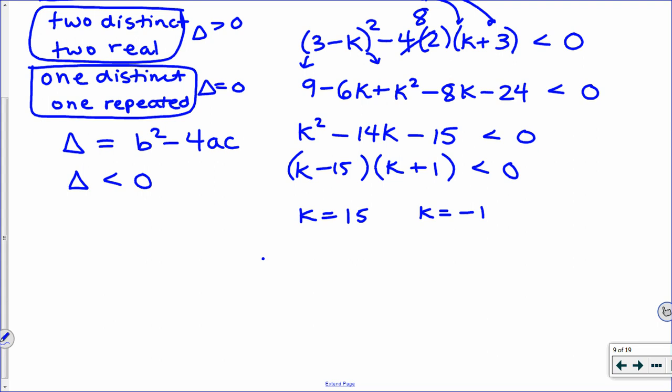We have to do a little bit of a number line check. So we're going to put a negative 1 on there and a 15 on there. And check, is it this region that works between the negative 1 and 15? Or is it the red region that works below the negative 1 and above the 15?